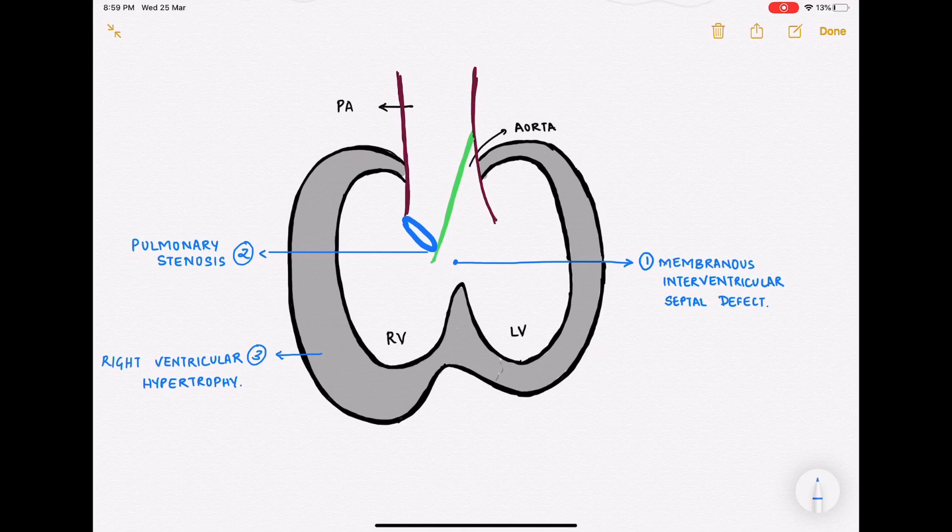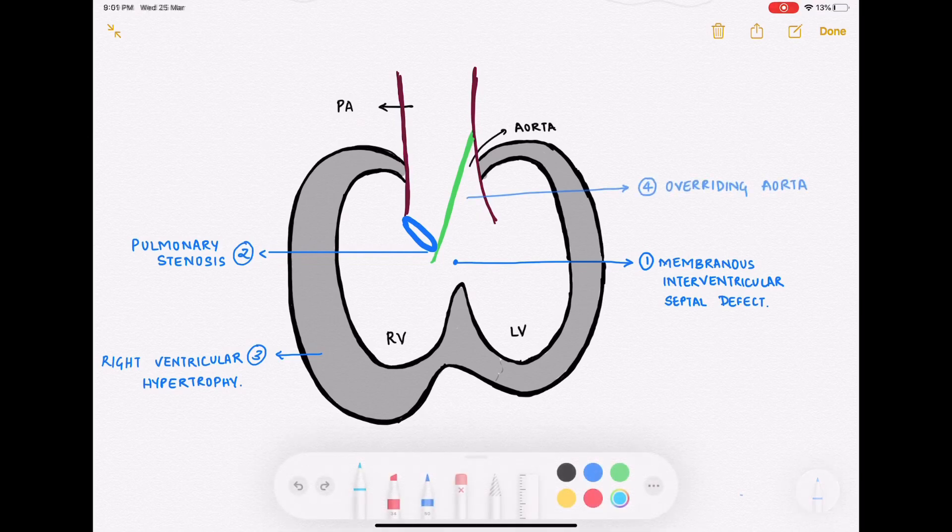The third pathology here is the right ventricular hypertrophy. This is because the right ventricle has to pump against a stenotic pulmonary valve, so over time it develops right ventricular hypertrophy. The fourth pathology is the overriding aorta - that means it receives the blood from both the right ventricle and the left ventricle.